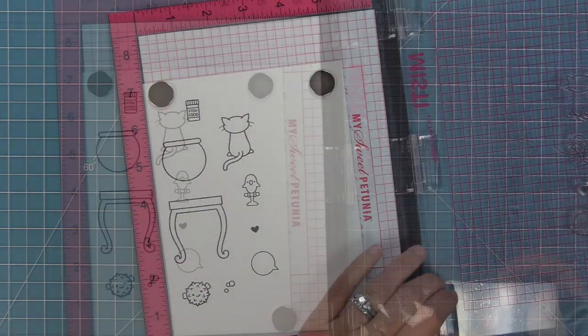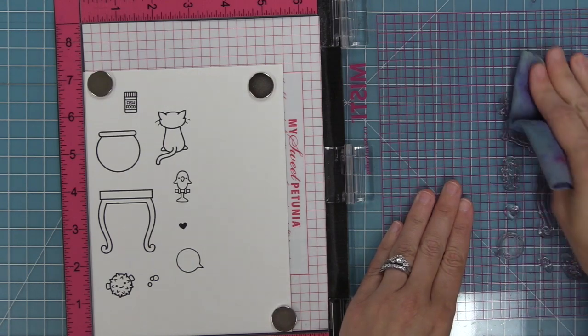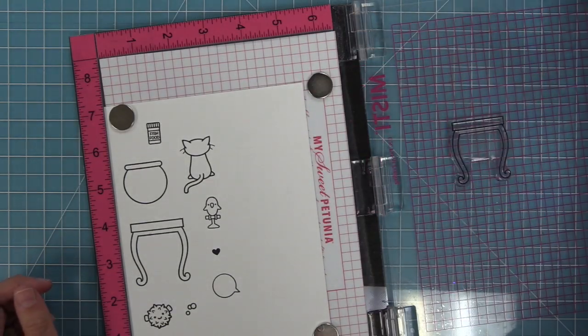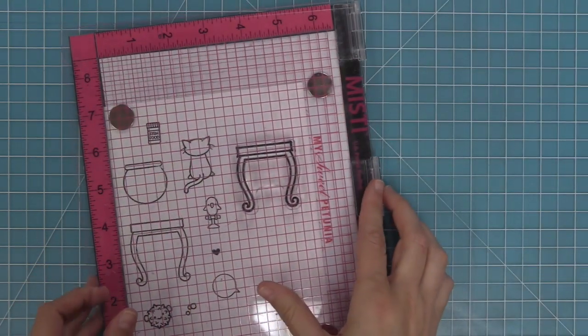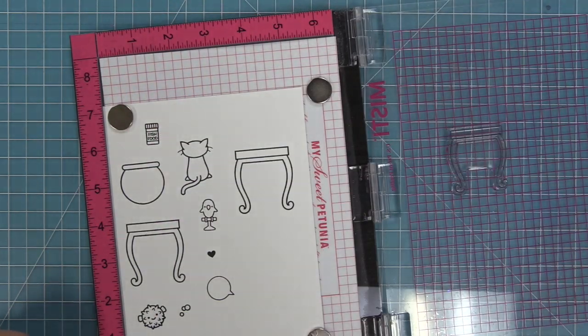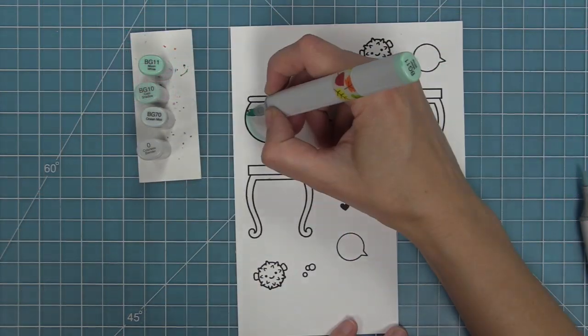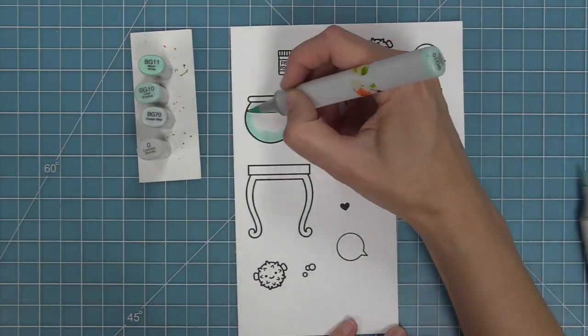Then I'm going to take the stamp chamois and clean all of these images off really well because I want to stamp the table one more time. We'll ink that up with the jet black ink and stamp that over to the side. Also, I forgot to stamp out the cat from Say What Pets, so later on I stamped that cat out.